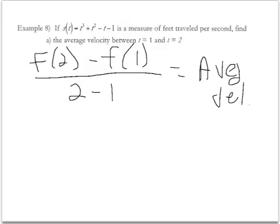We're going to find the average velocity on this cubic curve from t equals 1 to t equals 2. So we're just going to substitute in those values. Let's see, what do we get? 2 cubed is 8, plus 2 squared is 4, minus 2 minus 1, so that's the f of 2.